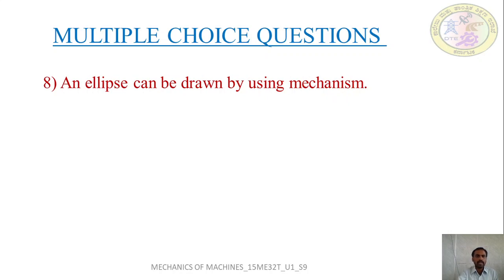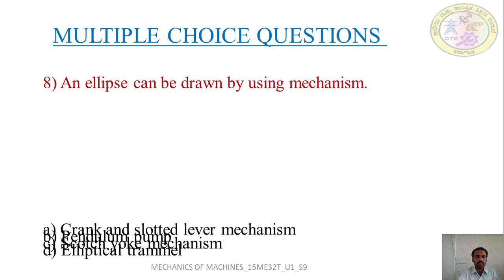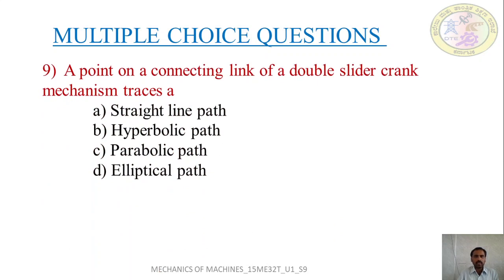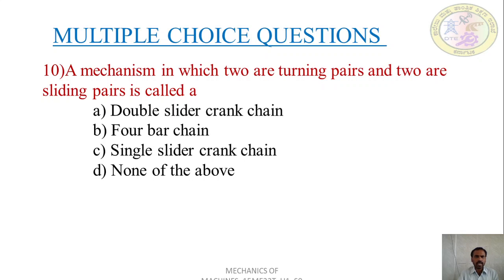Next question: an ellipse can be drawn by using which mechanism - crank and slotted lever mechanism, pendulum pump, Scotch yoke mechanism, or elliptical trammel? The answer is elliptical trammel. Next question: a point on the connecting link of a double slider crank mechanism traces which kind of path - straight line, hyperbolic, parabolic, or elliptical? The answer is elliptical path. Final MCQ: a mechanism with 2 turning pairs and 2 sliding pairs is called what - double slider, 4-bar chain, single slider, or none of the above? The answer is double slider crank chain, since as the name implies it has 2 sliding pairs.